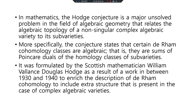More specifically, the Conjecture states that certain de Rham cohomology classes are algebraic, that is, they are linear combinations of the cohomology classes of sub-varieties. It was formulated by Scottish mathematician William Vallance Douglas Hodge as a result of work between 1930 and 1940 to enrich the description of the de Rham cohomology to include extra structure present in the case of complex algebraic varieties.